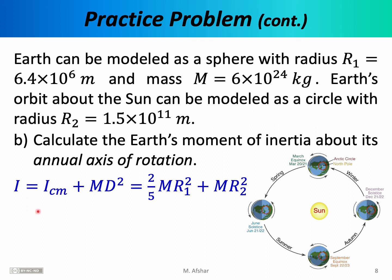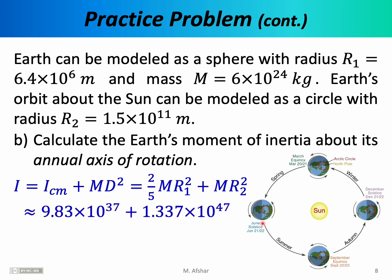I_CM is the moment of inertia relative to the center of mass, which equals 2/5 mr². We calculated this in Part A and now need to add md². Here m is the mass of the Earth and d is simply r₂ — the radius of the Earth's annual orbit around the Sun. Plugging in the numbers, we find that the moment of inertia about the annual axis of rotation is approximately 1.337 × 10⁴⁷ kg·m².